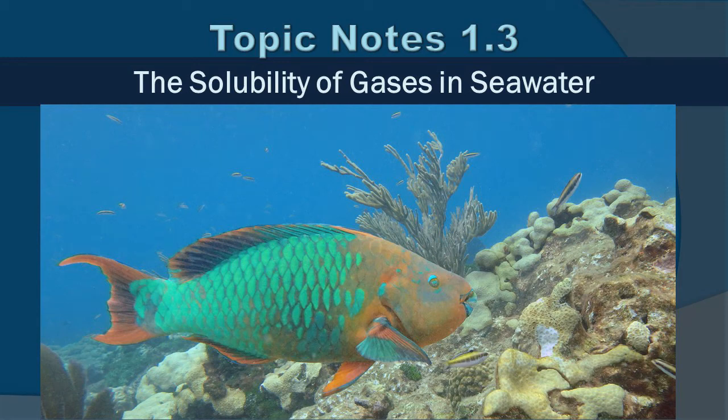Topic Notes 1.3: the solubility of gases in seawater. This is a rainbow parrotfish — I took this picture down in the Keys, although you can find them right here off Palm Beach County as well. Parrotfish, along with all the other fish, go through cellular respiration by taking in water and passing it along their gills, where they absorb oxygen and release CO2. We do the same thing, but we use lungs to do that.